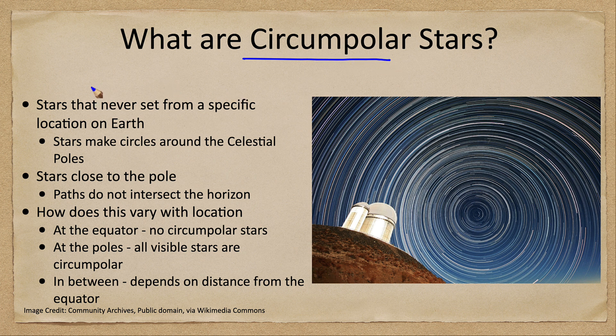A circumpolar star is a star that will never set from a specific location on Earth. It depends on exactly where you are on Earth what stars will be circumpolar, but there are some from almost every location on Earth.